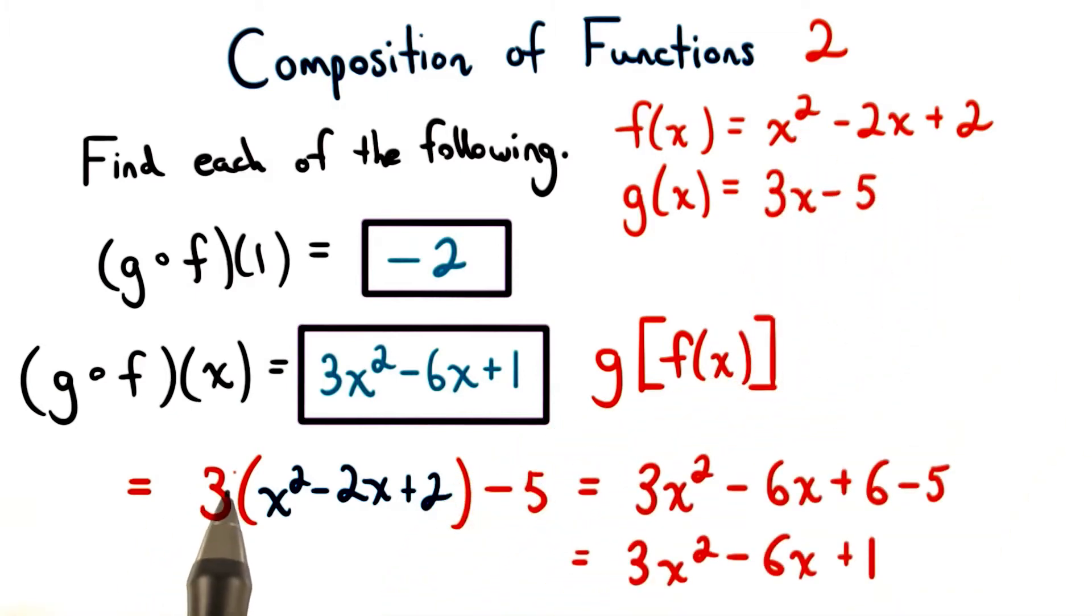We distribute the positive 3 to get 3x squared minus 6x plus 6. Then, we just combine the like terms on the end to get 3x squared minus 6x plus 1, g of f of x.